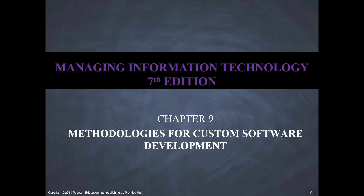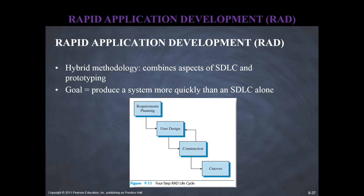Welcome to part 8 of our video presentation on chapter 9. In this part we will talk about rapid application development or RAD, which is a variation of prototyping and agile development methodologies. RAD is a hybrid methodology that combines features of both SDLC and prototyping. The most important goal of rapid application development is to produce a system quickly, much faster than by using SDLC alone.